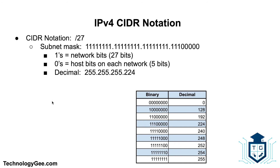In this example we'll figure out the subnet mask from only the CIDR notation slash 27. With slash 27 we turn on the first 27 bits: eight bits, eight bits, eight bits, and three bits — giving us 255.255.255.224. To verify: three ones followed by five zeros on the chart equals decimal 224. The ones equal the network bits and the zeros equal the host bits for each network.